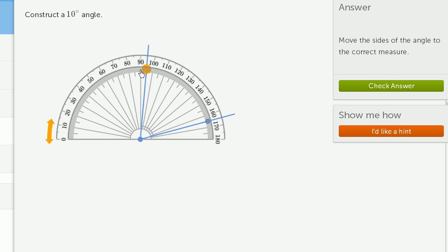Now let's put one of the rays here at 0 degrees. And now I'm going to put the other ray at 10 degrees. And it looks like I am done. I have constructed a 10-degree angle.